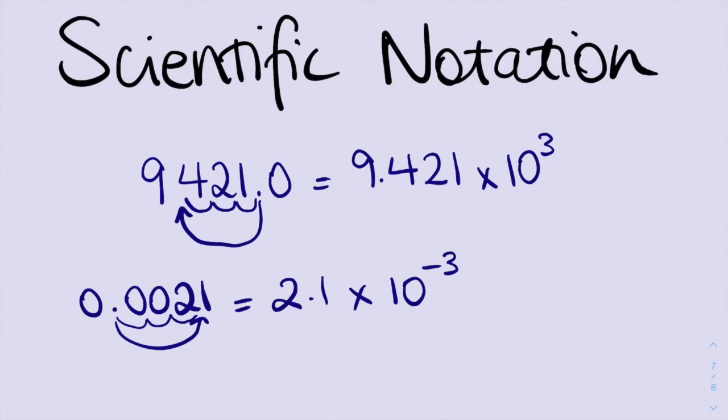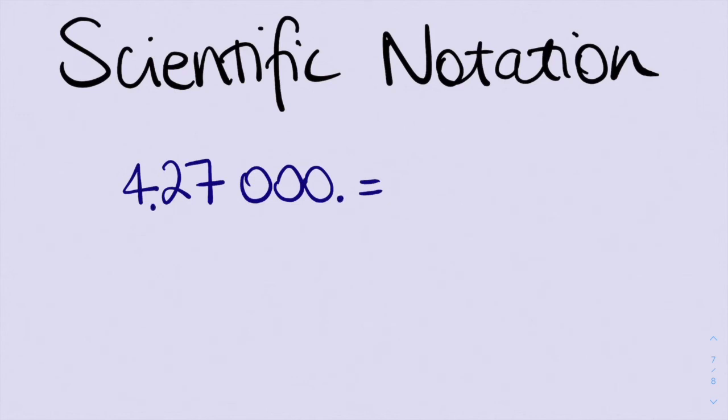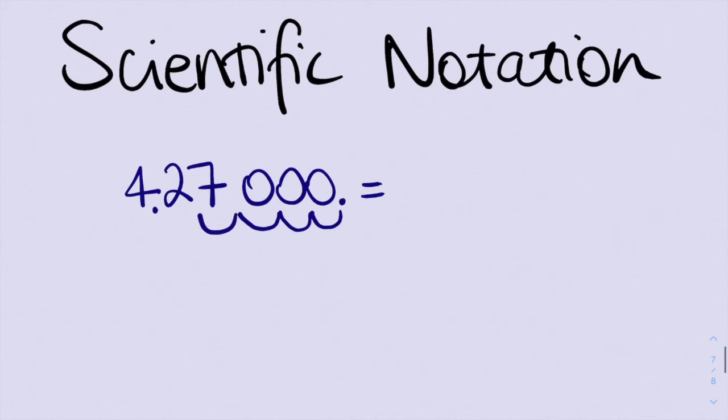So if we are jumping our decimal place to the right, we have this negative number up the top. If we're jumping our decimal places to the left, we have a positive number up the top. If I have the number 427,000, and I want to turn that into scientific notation, I want to get my decimal place from here to here. And that's going to go 1 jump, 2 jumps, 3 jumps, 4 jumps, 5. So we have 4.27 by 10 to the power of 5, because that's how many jumps it took us.